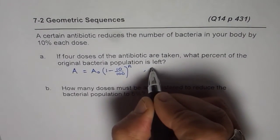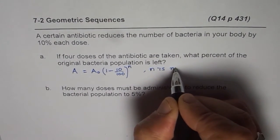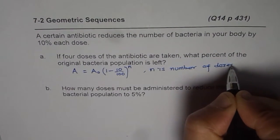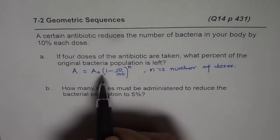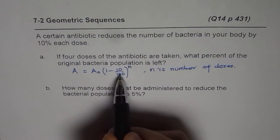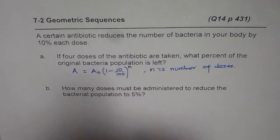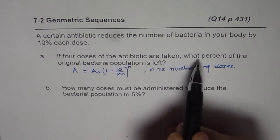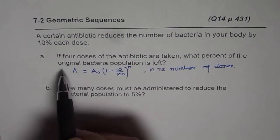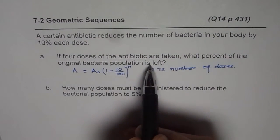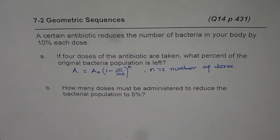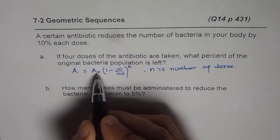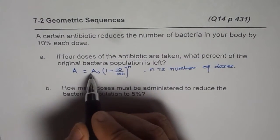Where n is the number of doses. So 1 minus 10% means it reduces by that amount. Now the question here is: if four doses of the antibiotic are taken, what percent of the original bacteria population is left? When we say what percent is left, it is a good idea to take A₀ as 100.